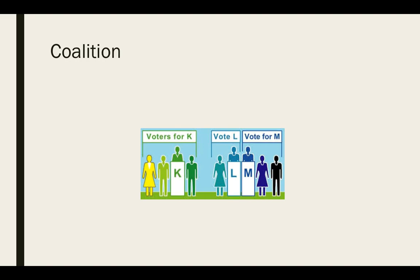A generic example: the most heated vote I take all year long is over the class song. If I gave three different choices for class song, you could potentially have one song get 40% of the votes, another get 30%, and another get 30%. Because that one song got 40%, it got the plurality and it's going to win. But really, 60% of the people don't like that song. So I always narrow it down to two songs because I want the majority to win — the song that a majority of the class likes, not a plurality, because that could be the least liked song.